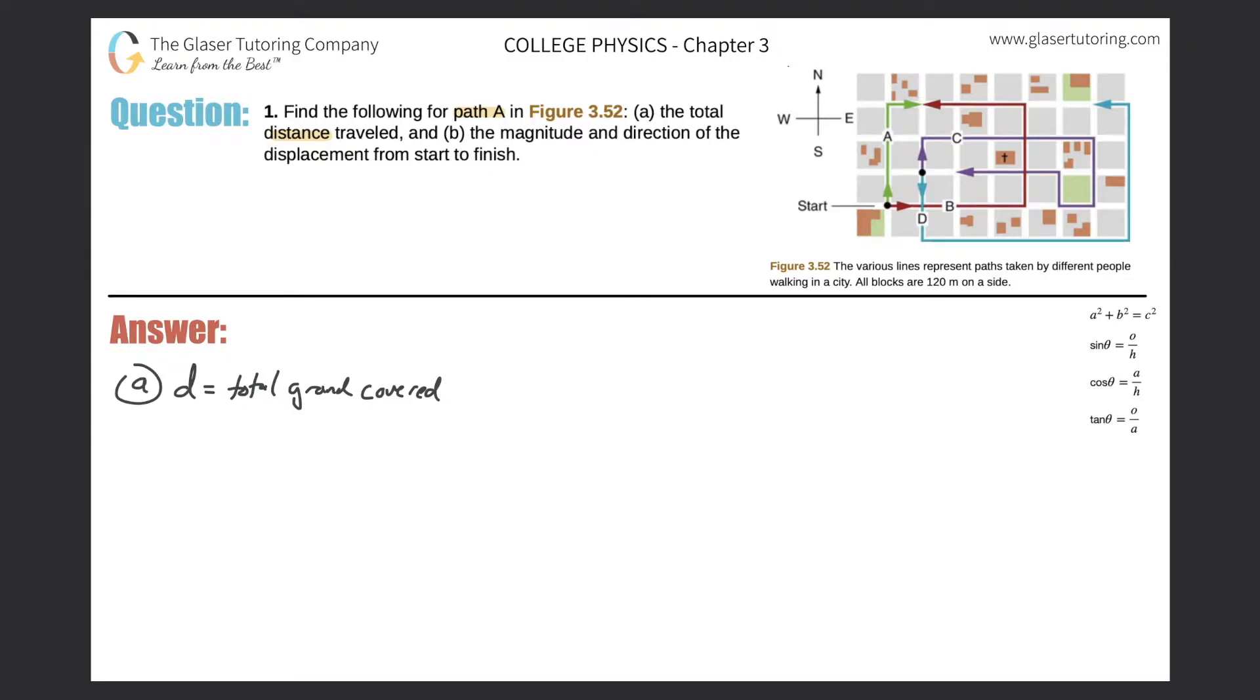Let's take a look at letter A up here in the picture on the right. A is represented by the green arrow. Where is it starting? Well, the object is starting here. And where is it ending? It looks like the object is ending right here at this particular point. So this is the end, and then here it tells me it's the start. Look at the note underneath the figure. The various lines represent paths taken by different people walking in a city. All blocks are 120 meters on a side.